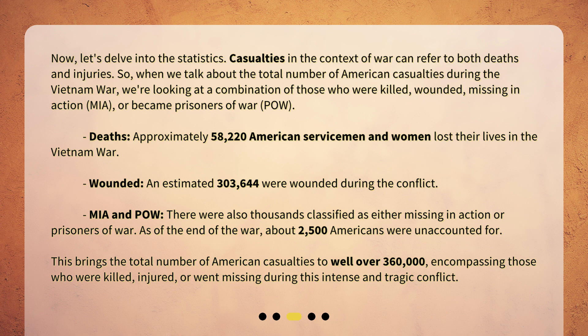Deaths: approximately 58,220 American servicemen and women lost their lives in the Vietnam War. Wounded: an estimated 303,644 were wounded during the conflict. There were also thousands classified as either missing in action or prisoners of war. As of the end of the war, about 2,500 Americans were unaccounted for. This brings the total number of American casualties to well over 360,000, encompassing those who were killed, injured, or went missing during this intense and tragic conflict.